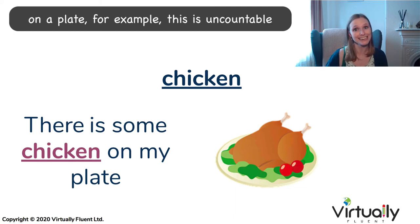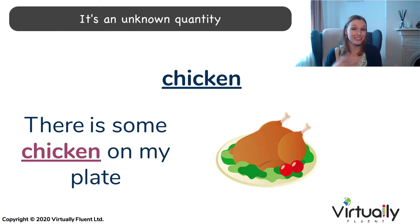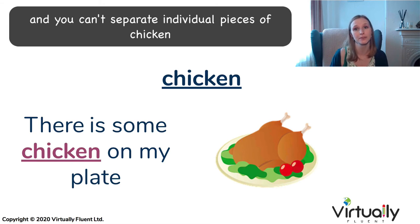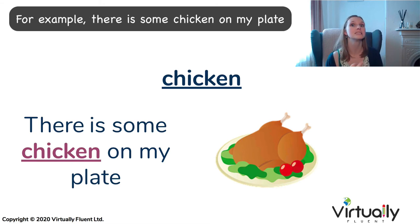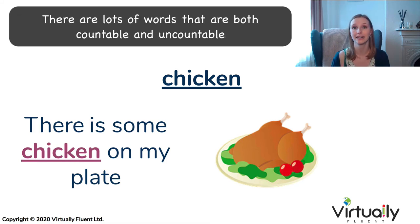But when we talk about chicken as food on a plate, this is uncountable. It's an unknown quantity and you can't separate individual pieces of chicken. For example, there is some chicken on my plate. There are lots of words that are both countable and uncountable.